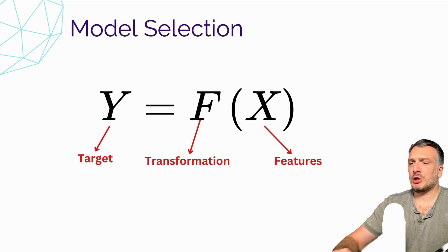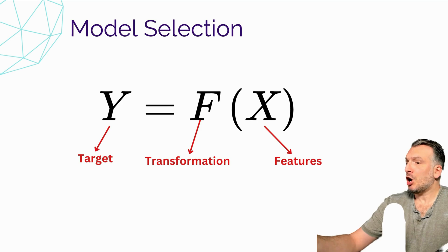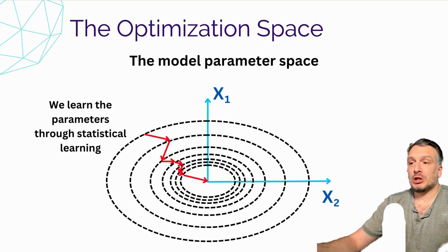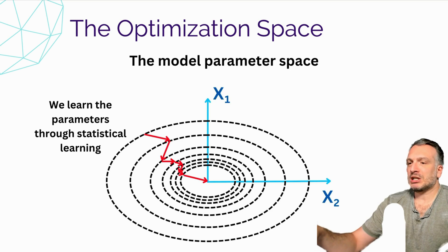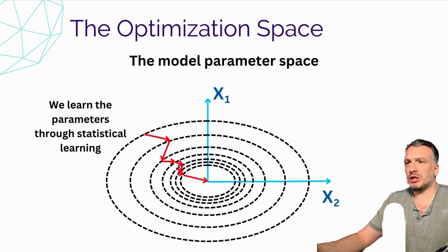What is the optimal transformation that takes us from X to Y? You can think about a machine learning model and all the aspects of optimization related to training a model as a transformation from a set of features to the target we're trying to predict. The term optimal implies that we have a model preference metric, and the optimal model is the one that maximizes that metric. There are different axes we can consider within the concept of model optimization.